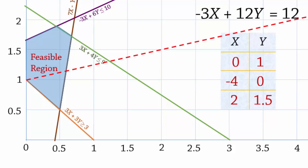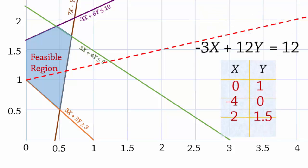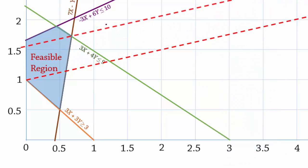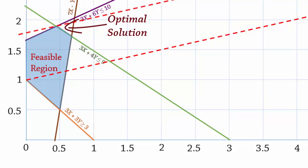Since this is a maximization problem, we slowly move the objective function line upwards away from the origin parallel to itself to obtain the optimal solution point. Now, moving the objective function line shows that the optimal solution occurs here at the line intersection of constraints 2 and 3.